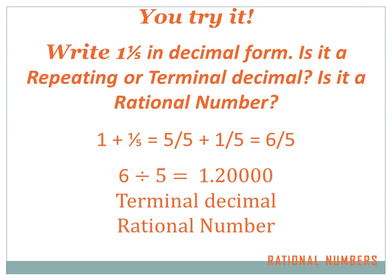1 and 1 fifth can be rewritten as 1 plus 1 fifth. That can be rewritten as 5 over 5 plus 1 fifth, because 1 equals 5 over 5. 5 over 5 plus 1 over 5 equals 6 over 5. Now let's convert that to a decimal: 6 divided by 5 equals 1.2, or 1.2000... So 1 and 1 fifth converts to the decimal 1.2, and it's a terminating decimal because the decimals end at the 2. It's a rational number because it's a terminating decimal.